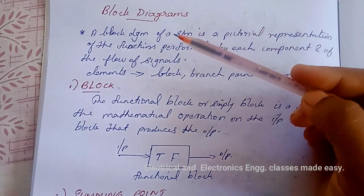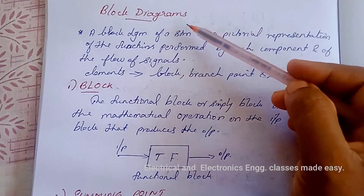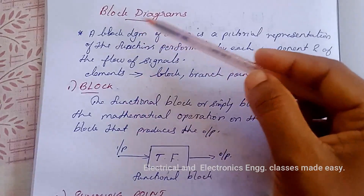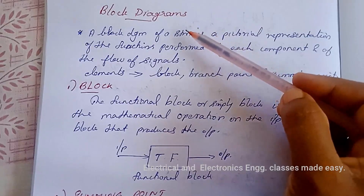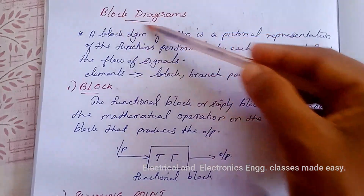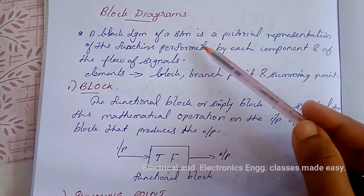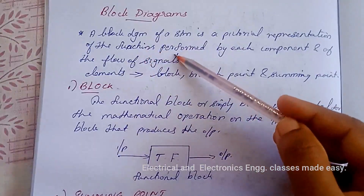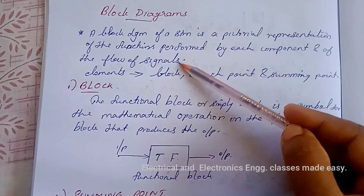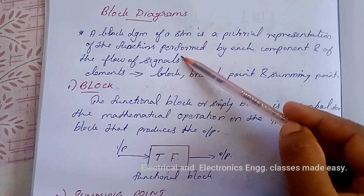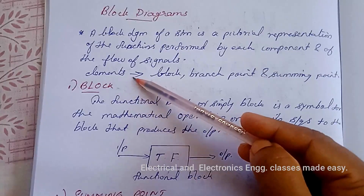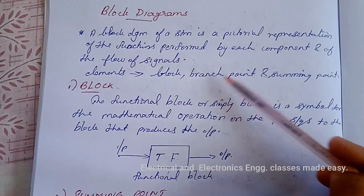Welcome to this class on block diagrams. A control system may consist of a number of components, and in control engineering, to show the functions performed by each component, we commonly use a diagram called the block diagram. A block diagram is a pictorial representation of the functions performed by each component and of the flow of signals, depicting the interrelationships among components. The elements of a block diagram are: block, branch point, and summing point.